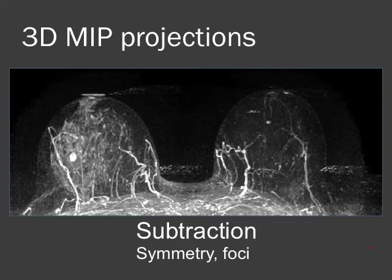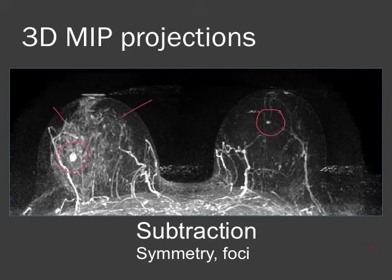3D MIP reconstructions are extremely helpful. In this different patient you can see bilateral breast masses really jump out compared to the background diffuse enhancement in the right breast and the blood vessels. These are 3D and can be rotated as needed.